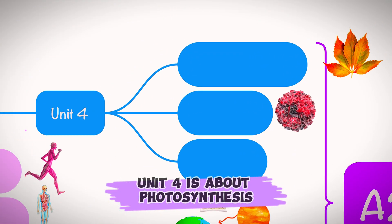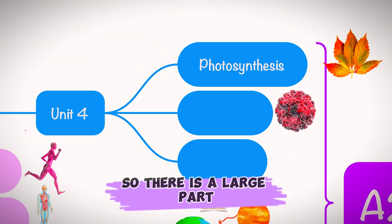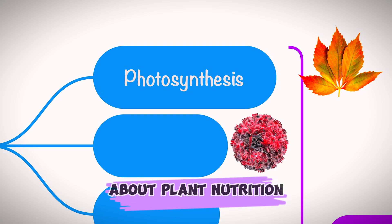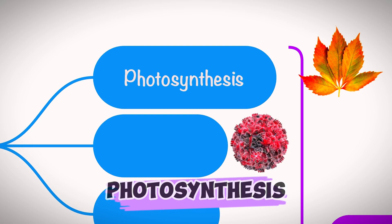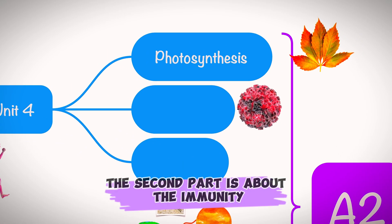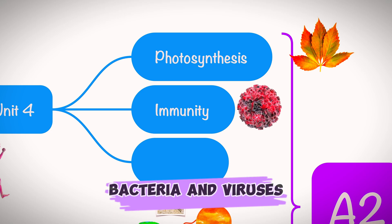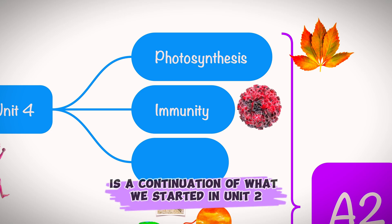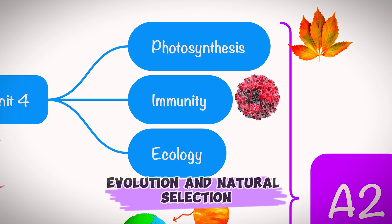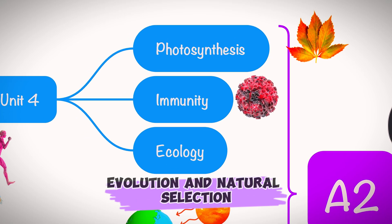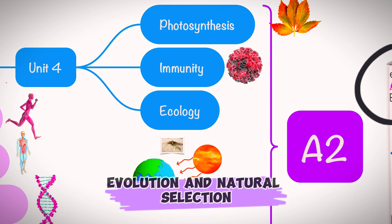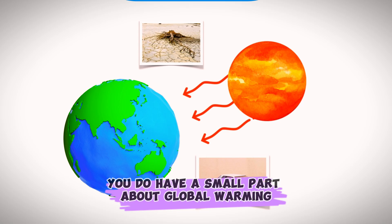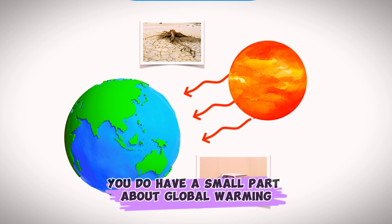Unit 4 starts with a large section on plant nutrition and photosynthesis. The second part covers immunity, bacteria, and viruses. The third component is a continuation of Unit 2 topics — ecology, evolution, and natural selection. There's also a small part about global warming.